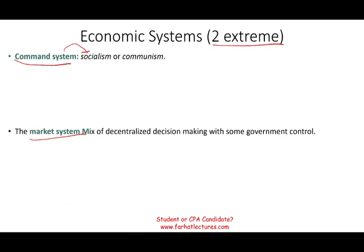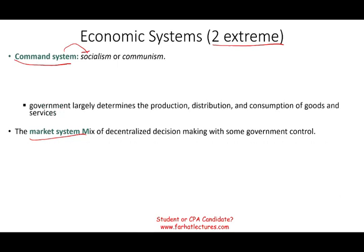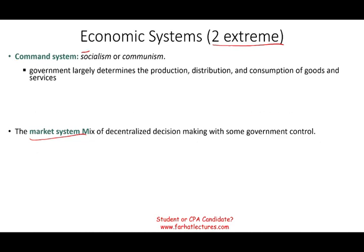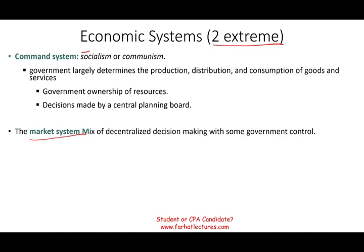The command system, or communism or socialism, is where the government largely determines the production, distribution, and consumption of goods and services. The government tells you how much to produce, how much to consume, how to distribute — so the government owns the resources, not individuals or businesses. Decisions are made by a centralized planning board. Examples of these economies include Venezuela, North Korea, Cuba, and Myanmar — countries that still follow a strict command socialist system.